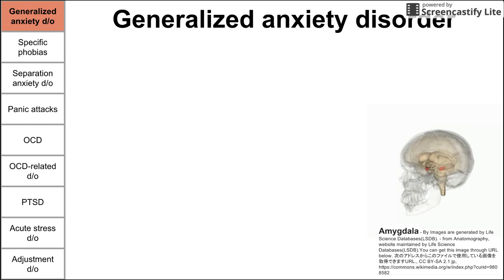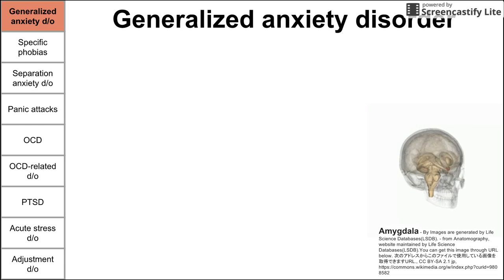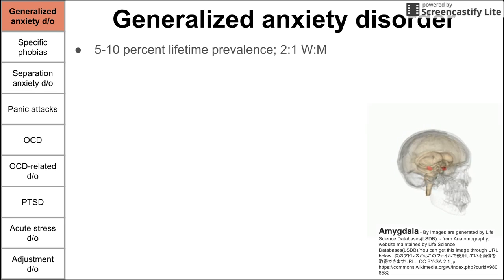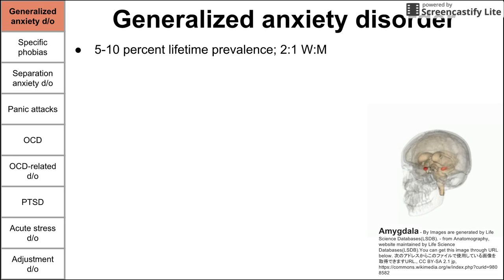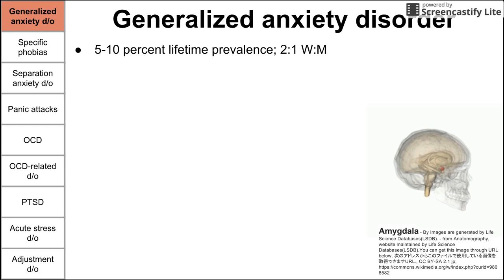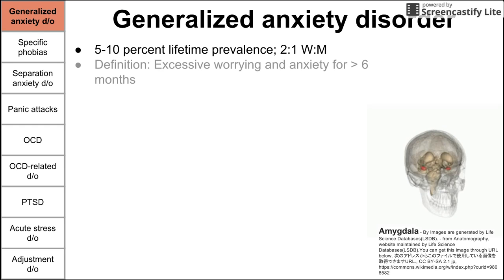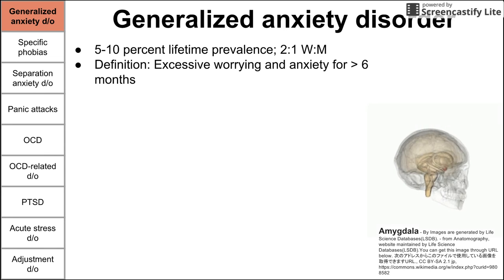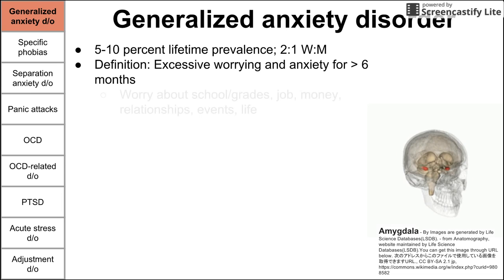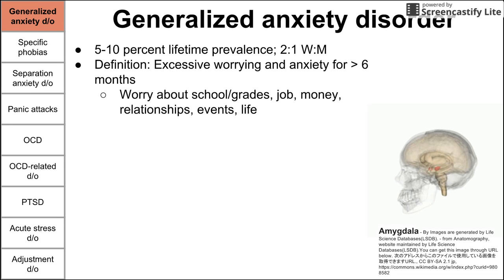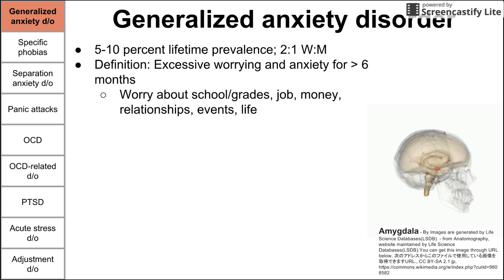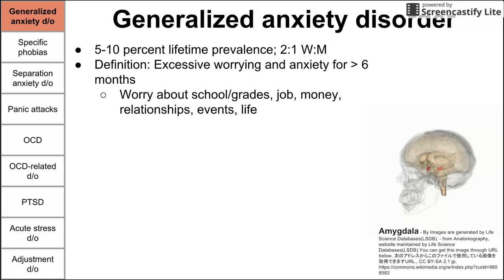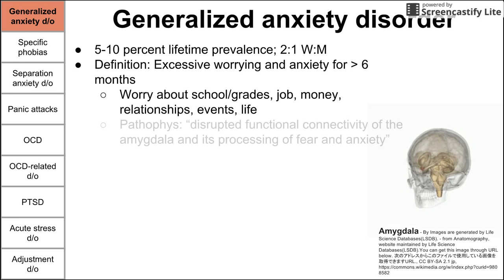Let's get started with generalized anxiety disorder, sometimes abbreviated GAD. The prevalence of GAD is 5 to 10%, and it occurs twice as often in women than men. Generalized anxiety disorder is essentially excessive worrying and anxiety for at least six months. People typically worry about school, grades, jobs, how much money they have, relationships, life events, and other parts of life — worry about anything and everything.